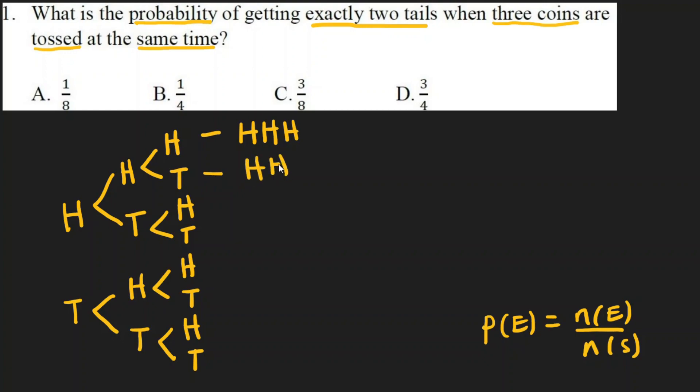Let's enumerate all possible outcomes when tossing three coins: head head head, head head tail, head tail head, head tail tail, tail head head, tail head tail, tail tail head, tail tail tail.